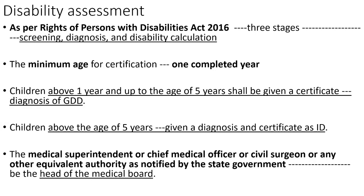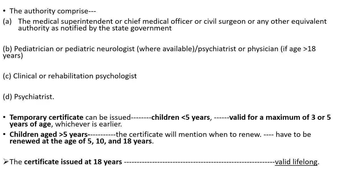Regarding disability assessment as per the Rights of Persons with Disabilities Act 2016, three stages exist: screening, diagnosis, and disability calculation. Minimum age for certification is one completed year. Children from one year up to age five shall be given a diagnosis of 'global developmental delay' only; children above five years can receive a diagnosis and certificate as intellectual disability. The medical board must be headed by a medical superintendent, chief medical officer, civil surgeon, or equivalent authority. The board comprises: a pediatrician or pediatric neurologist (for children), or psychiatrist or physician (for those above 18 years); a clinical or rehabilitation psychologist; and another psychiatrist. Temporary certificates can be issued for children less than five years, valid up to three or five years of age whichever is earlier. Certificates issued after five years must be renewed at age eight, ten, then 18 years; certificates issued at 18 years are valid lifelong.